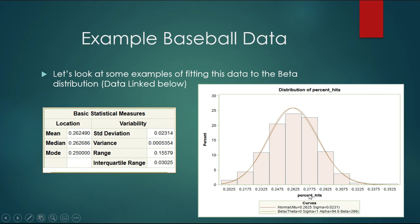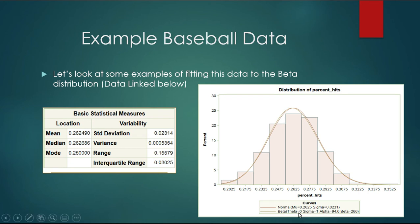Quick note on theta and sigma: these are two ways to define the beta distribution's range of inputs. Our software allows us to specify the minimum and maximum of our data. Theta is the minimum value, and the upper bound is theta plus sigma. So in this case our data looks pretty normal, which makes things easier.